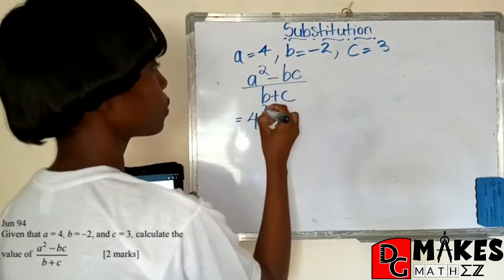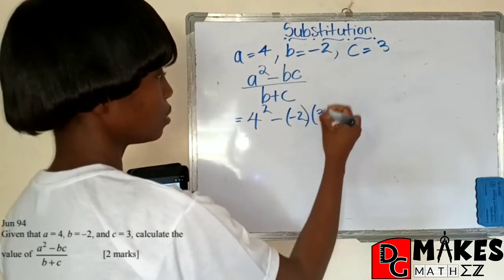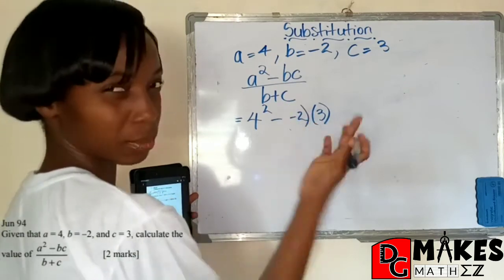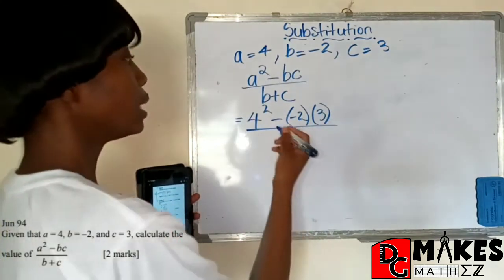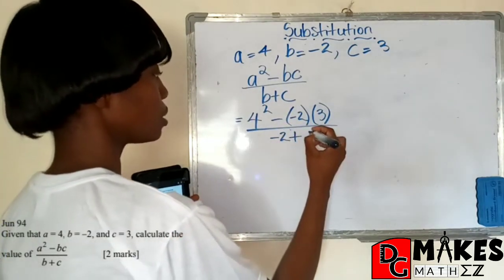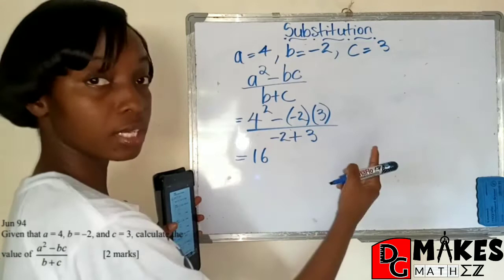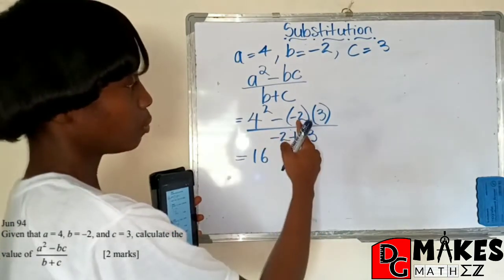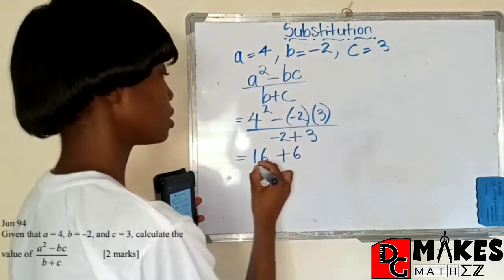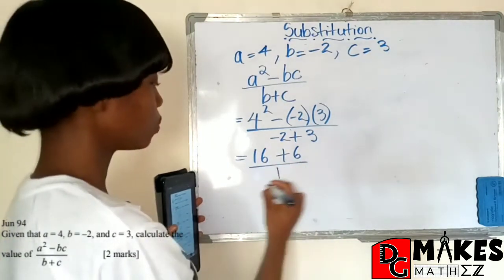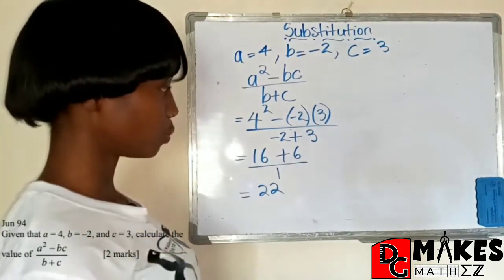So A squared is going to be 4 squared minus B times C, which is negative 2 times 3. Because I'm going to have two signs right beside each other, we just use the brackets to separate them. All right, B is going to be negative 2 plus C is going to be 3. And so we have 4 squared to be 16. This would have been positive 2 times 3. A negative times a negative, positive times 3, so that would give us positive 6. Negative 2 plus 3 would give us 1. And so our answer is 22 divided by 1, which is 22. Done.